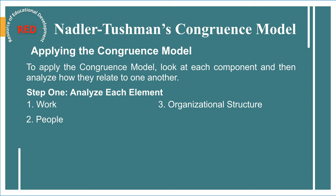Step one, element four — culture: this is often the element with the greatest influence but the hardest to analyze. Explore your organization's culture by considering the leadership style and the beliefs and values of the individuals who work there. Think about the unwritten rules that define how work really gets done. These stem from people's attitudes, beliefs, values, and behavior, and from the processes and structures already examined. Look at how information flows around the organization and whether there are any political networks in play.